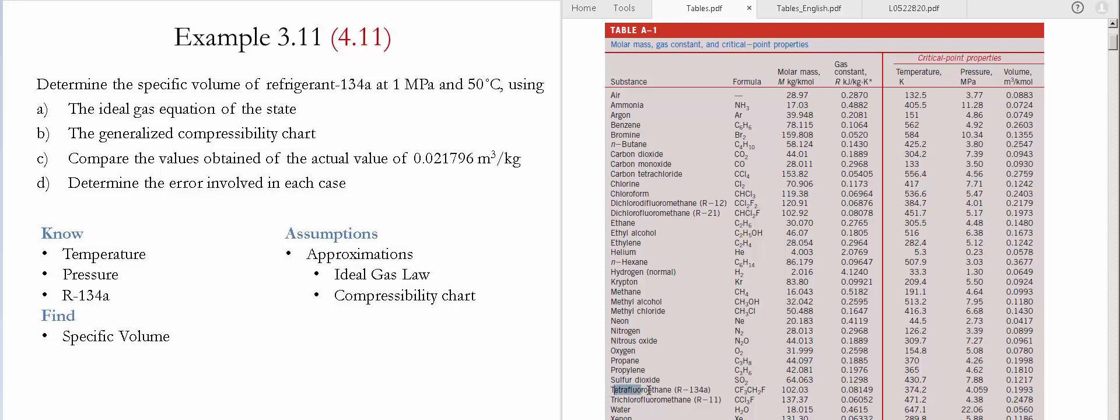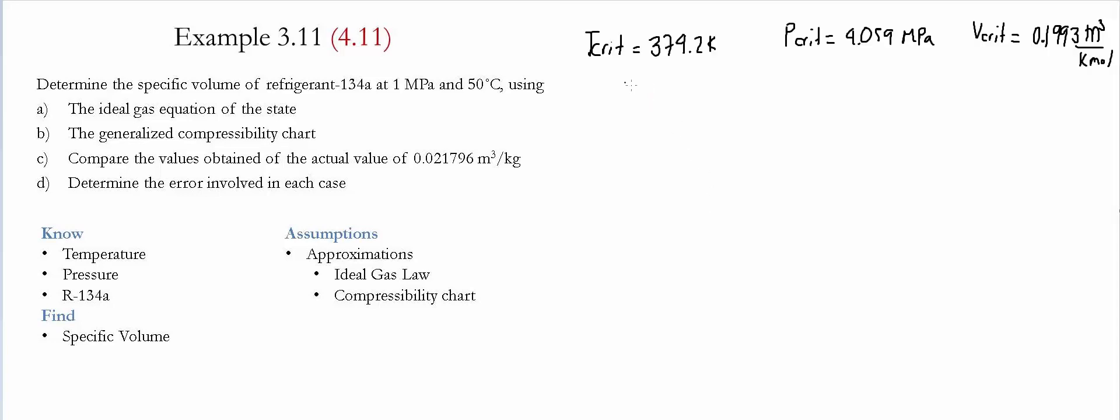Notice for R134A, we have these values for temperature, pressure, and volume for critical point properties. Once we have the critical values of temperature, pressure, and volume, we need to calculate the reduced values for pressure and temperature.